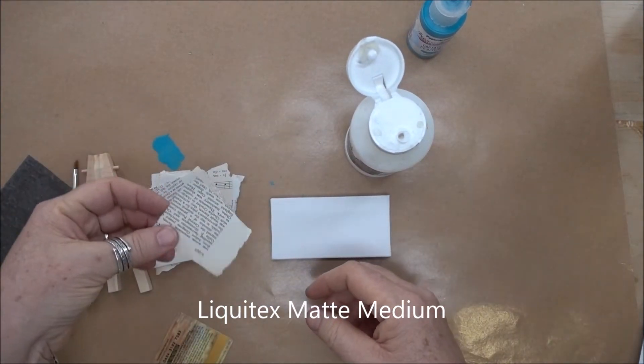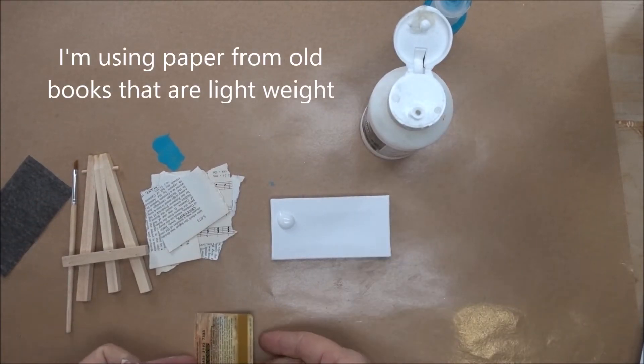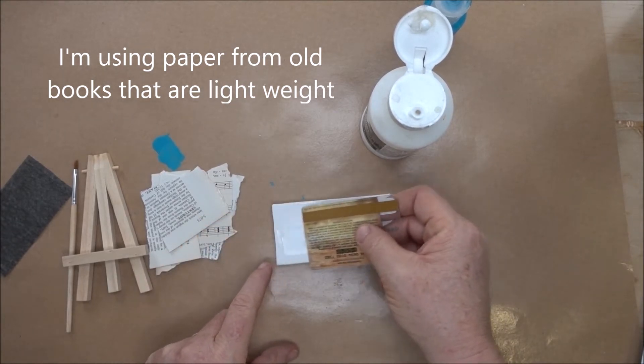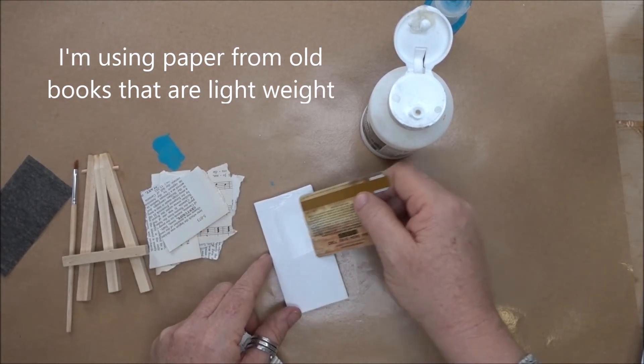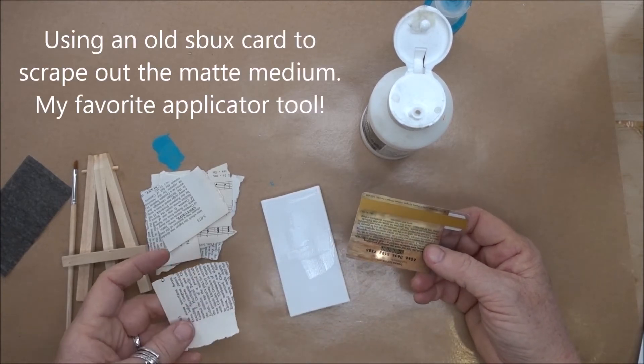I've taken some random papers and I'm going to squirt a little bit of the matte medium out on the canvas. I use my old credit card, old hotel key card, and I'm spreading the matte medium out on the surface.